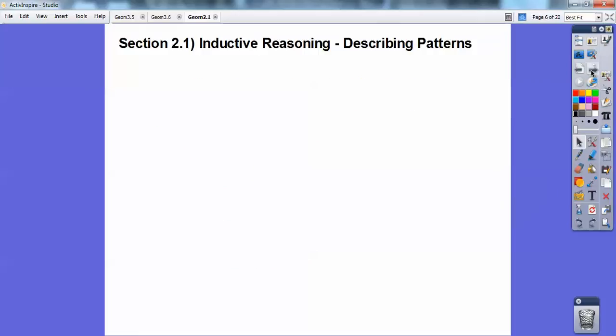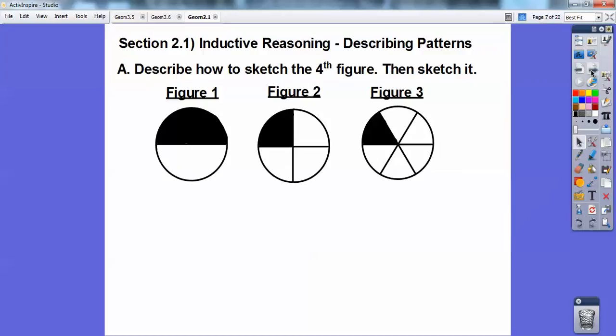All right, so let's do some inductive reasoning and describing patterns. Inductive reasoning is just making some educated guesses. So you look at what's happening here. So describe how to sketch the fourth figure, and then sketch it. So here I have a circle cut into two equal pieces. Here's a circle cut into four equal pieces. Here's a circle cut into six equal pieces.